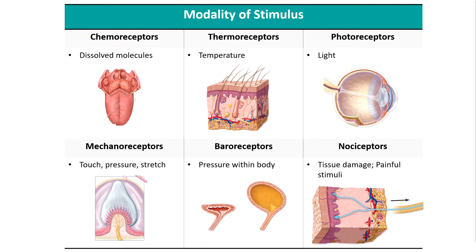Photoreceptors detect changes in light. We'll discuss two different types of photoreceptors in the eye later — rods and cones. Mechanoreceptors detect physical distortion in their cell membranes, caused by things such as touch, pressure, vibration, and stretch. These include cutaneous receptors of the skin, and also receptors in your ear responsible for equilibrium and detection of sound, because those are ultimately triggered by movement in the air or movement in fluids.